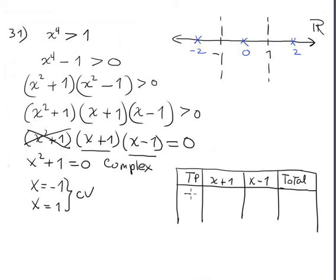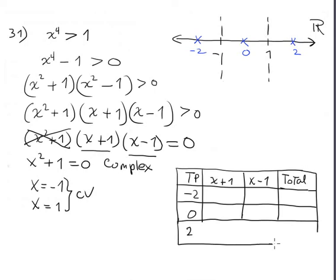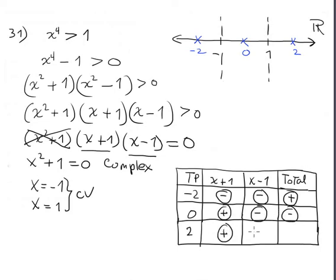The testing points are -2, 0, and 2. Plugging -2 into (x+1) gives negative; into (x-1) also negative; negative times negative is positive. For 0: (x+1) is positive, (x-1) is negative, so the result is negative. For 2: both factors are positive, therefore the result is positive.